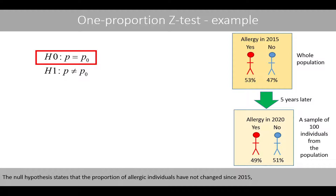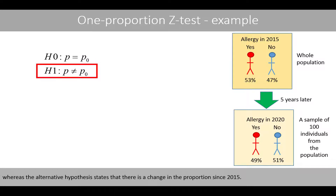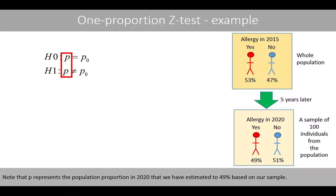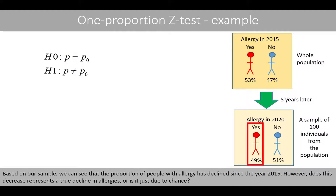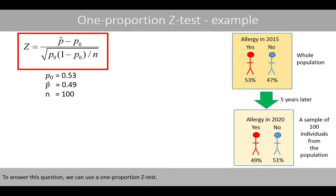The null hypothesis states that the proportion of allergic individuals has not changed since 2015, whereas the alternative hypothesis states that there is a change in the proportion since 2015. Note that p represents the population proportion in 2020, estimated at 49% based on our sample. Based on our sample, the proportion of people with allergy has declined since 2015. However, does this decrease represent a true decline in allergies, or is it just due to chance? To answer this question, we can use a one-proportion Z-test.